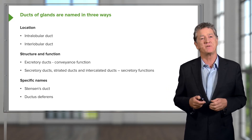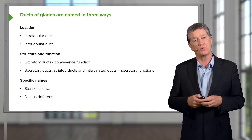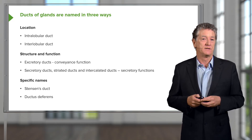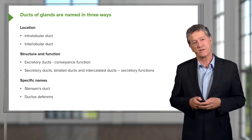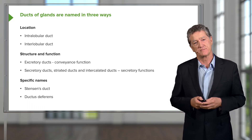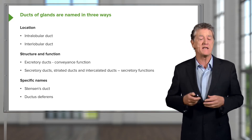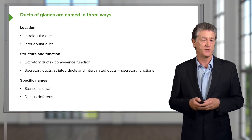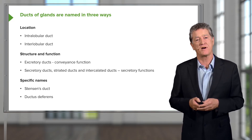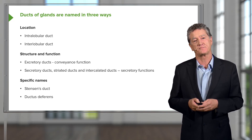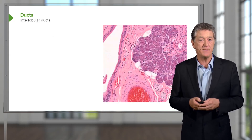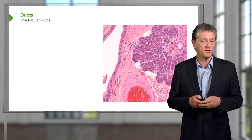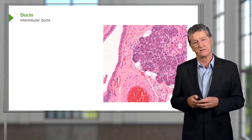Sometimes we name ducts according to where they're located — for instance, the ductus deferens in the male reproductive system. Sometimes they're named after the individuals who first described them. Let's have a look at a couple of images illustrating certain ducts.